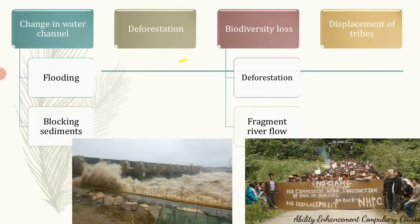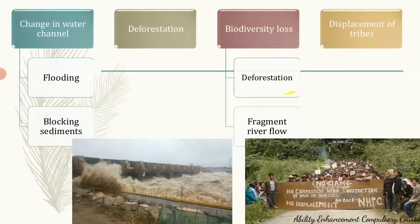To build a dam, huge tracts of land must be cleared and large acres of trees cut down, leading to deforestation and loss of biodiversity. Alongside that, dams fragment the river flow, making it difficult for fish and aquatic life to migrate, which again affects biodiversity.